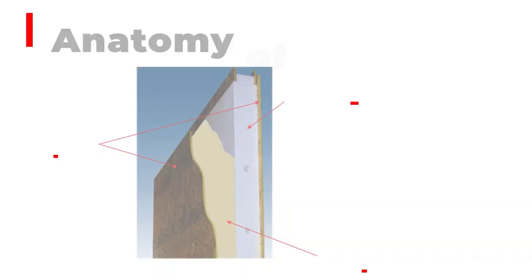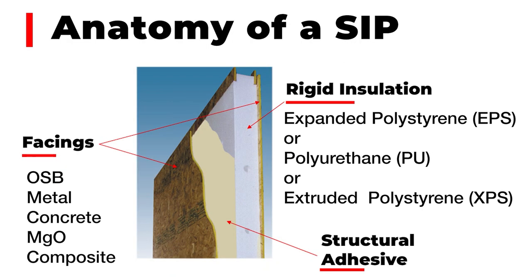In general, a SIP is three things: skins, a core, and they're laminated together. It's not really strong before lamination, but once laminated it becomes very rigid. The predominant facing is OSB — it's the ubiquitous SIP within the industry, making up about 98–99% of all true SIPs sold.